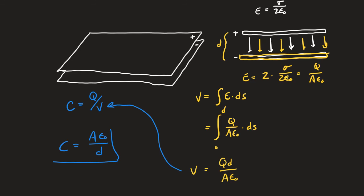This result shouldn't be a surprise, and this process shouldn't be a surprise either. It's a reminder that there are four steps to figure out the capacitance. The only remaining shape we haven't looked at yet — in the cylindrical capacitor, as the outer shell goes to infinity, the capacitance goes to zero. But this year's shape, the spherical capacitor, is the one I'm going to leave you to consider.